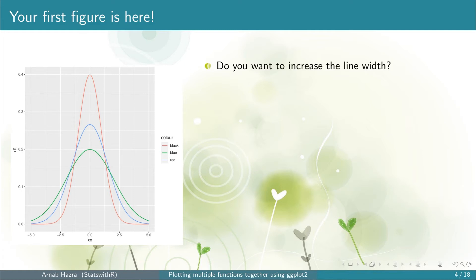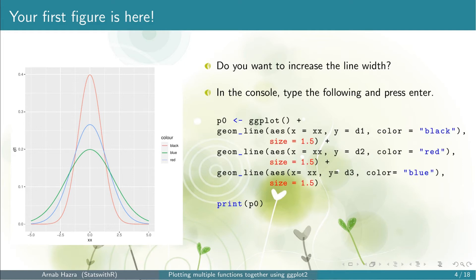The curves look quite narrow and you might want to increase the line width. To do that, within geom_line outside aesthetics, set size equals to 1.5 for each of d1, d2, and d3. The default size is 0.5, so setting size to 1.5 increases the line width. Note that we are storing the steps so far into p0, and we will keep adding layers to p0.